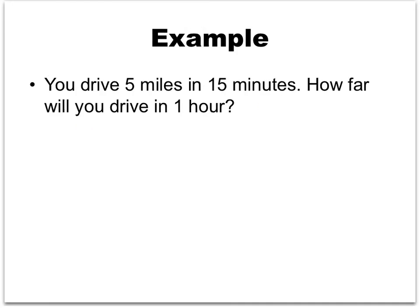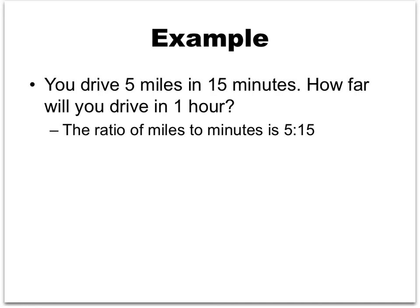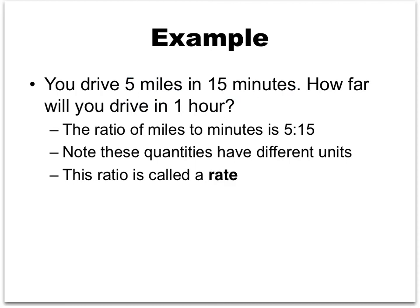Let's apply a double number line to an example. Suppose you drive 5 miles in 15 minutes — how far will you drive in 1 hour? We have two different quantities: 5 miles and 15 minutes. Notice that these quantities have different units — miles and minutes — unlike our previous example where both quantities were in cups. When a ratio involves different units like this, it is called a rate. A rate is a special type of ratio.